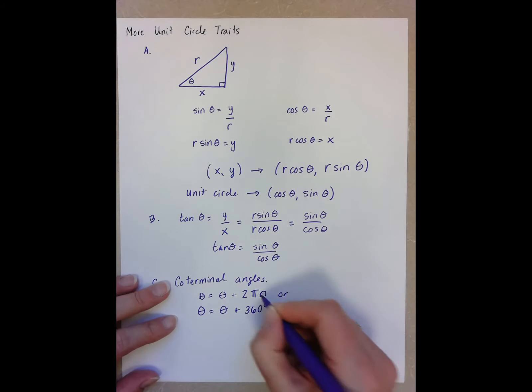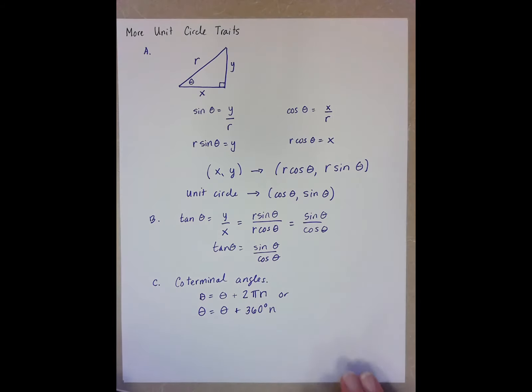And the n's here meaning that any number, any integer. So I can go around my circle 5 times and land on a 30 degree angle, or I can go around my circle negative 10 times and land on a 45 degree angle. That coterminal meaning that I can just keep going around the circle for the rest of my life.